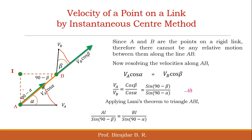We now apply Lami's theorem to triangle ABI. Side AI is opposite the angle (90°−β), so AI divided by sin(90°−β), and side BI is opposite angle (90°−α), so BI divided by sin(90°−α). Rearranging gives AI divided by BI equal to sin(90°−β) divided by sin(90°−α), which is Equation 2.